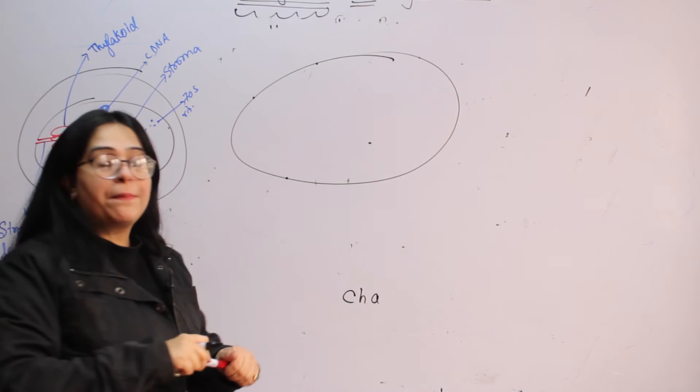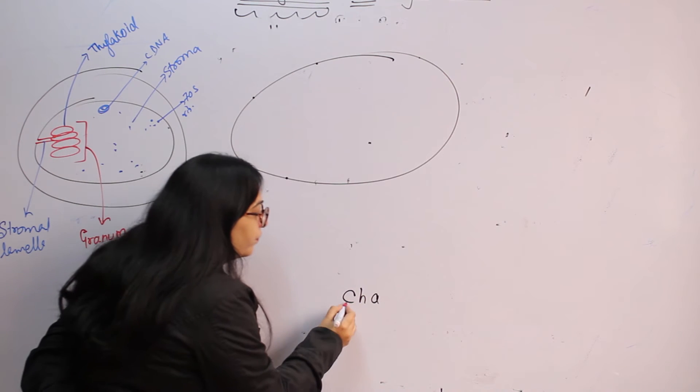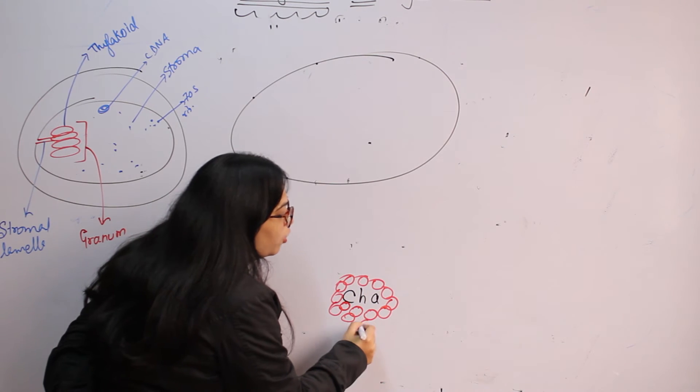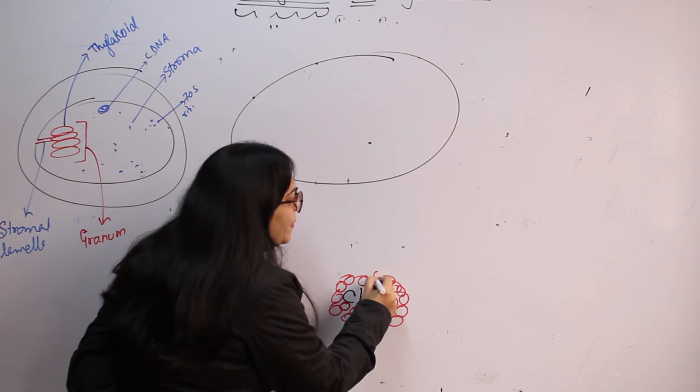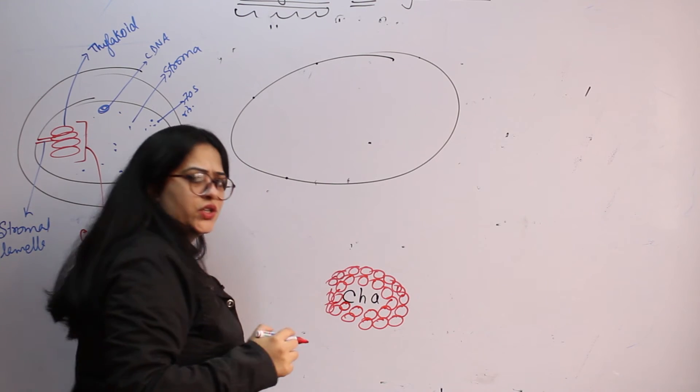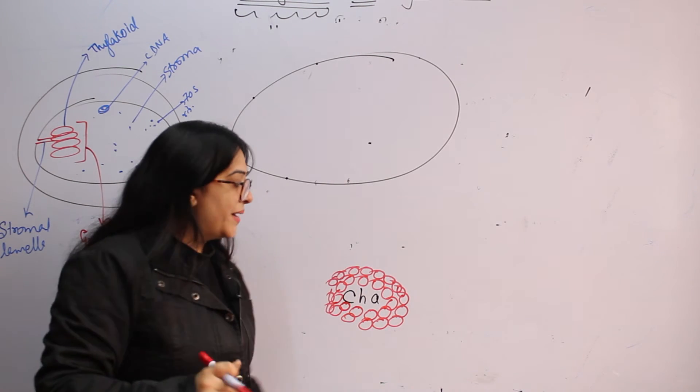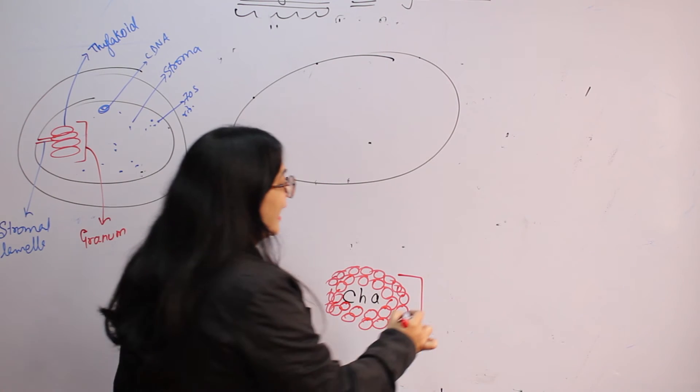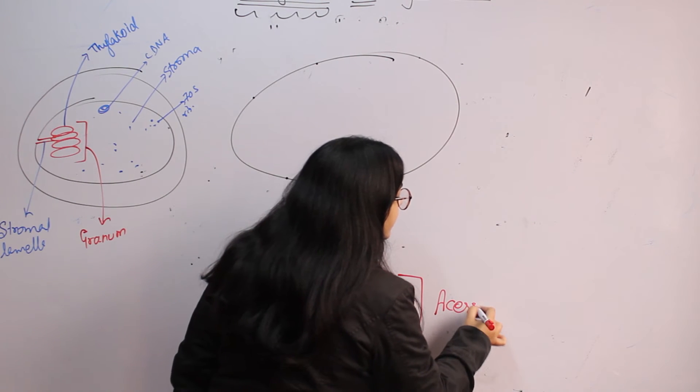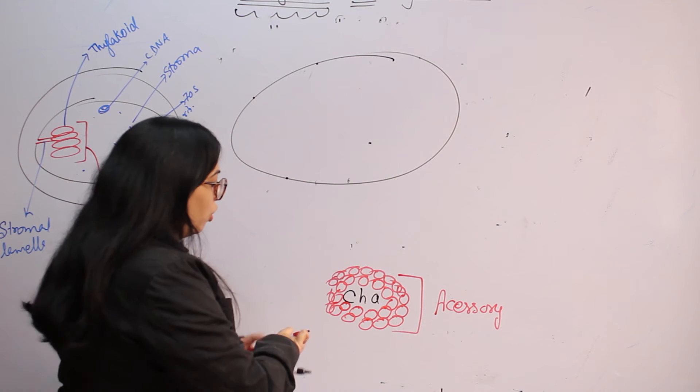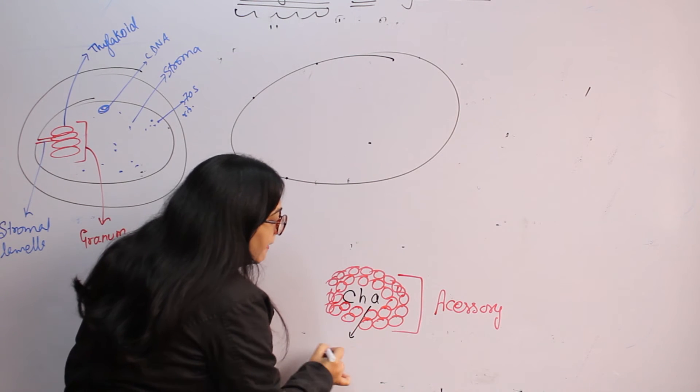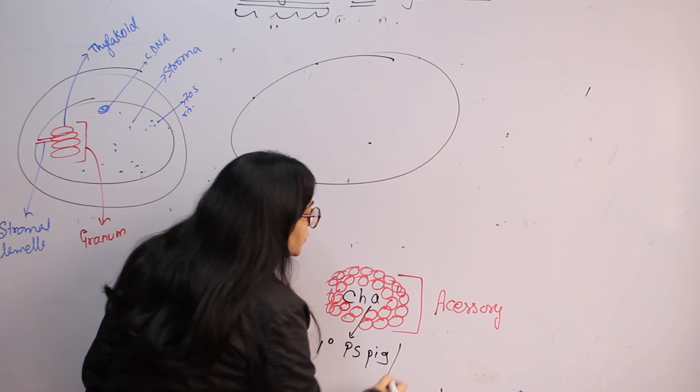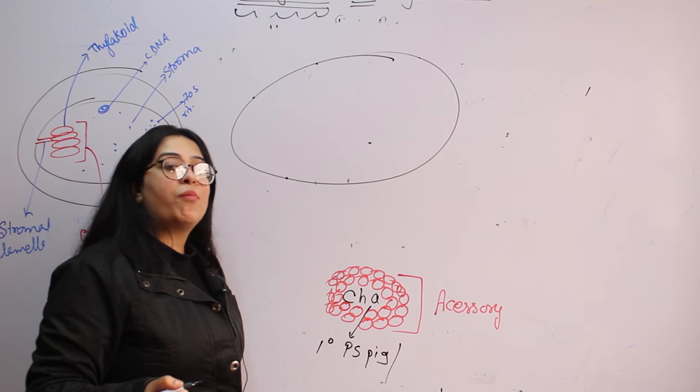So that group of photosynthetic pigments will have in center always chlorophyll A. This chlorophyll A is the primary photosynthetic pigment because the reaction is going to start from or light reaction is going to start from chlorophyll A only. Surrounding chlorophyll A are present a group of other photosynthetic pigments which can be chlorophyll. Chlorophyll A is the primary photosynthetic pigment or as we said the reaction is going to start from chlorophyll A only.